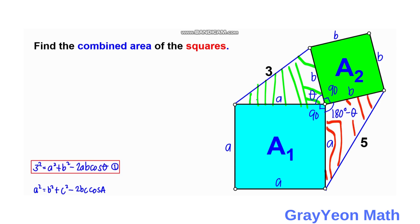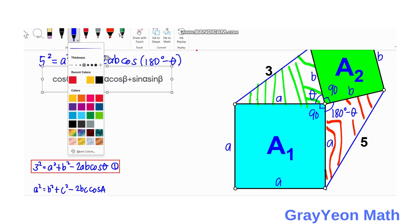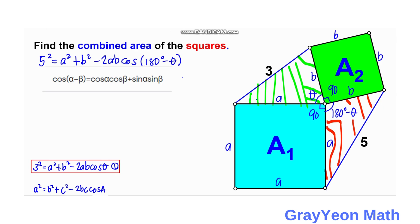For the other (red shaded) triangle, the side opposite the angle is 5. So we write: 5² = A² + B² − 2AB·cos(180° − θ). We need to simplify the term cos(180° − θ).